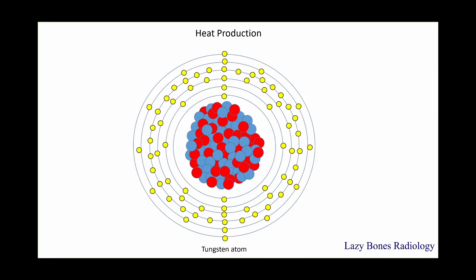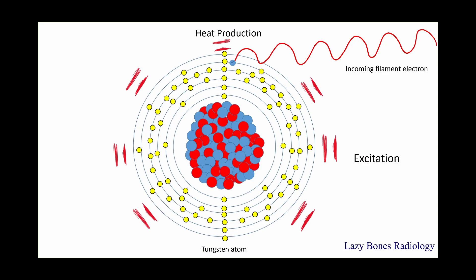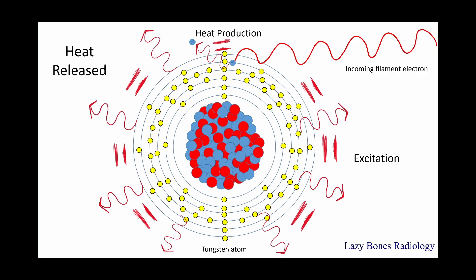Now let's look at how heat production is formed. As you can see, this is a tungsten atom. As an incoming filament electron enters the outer shell electrons, this causes the energy level of the atom to increase — this is known as excitation. Immediately after, the incoming filament electron leaves the atom, which causes a release of energy, known as heat release or heat production. Remember, no x-rays are formed during heat production, only the release of heat.